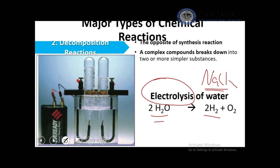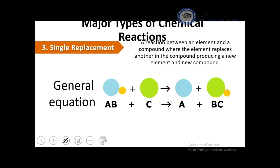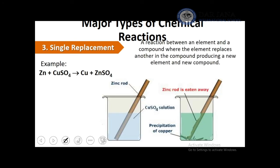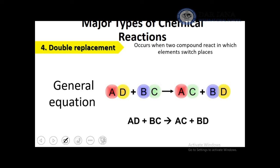Decomposition requires energy to break bonds (e.g., between hydrogen and oxygen), making it an endothermic reaction. Single replacement (AB + C → AC + B) replaces one element with another in a compound — for example, zinc + copper sulfate → copper + zinc sulfate. Double replacement (AB + CD → AC + BD) switches places between two elements in two compounds.